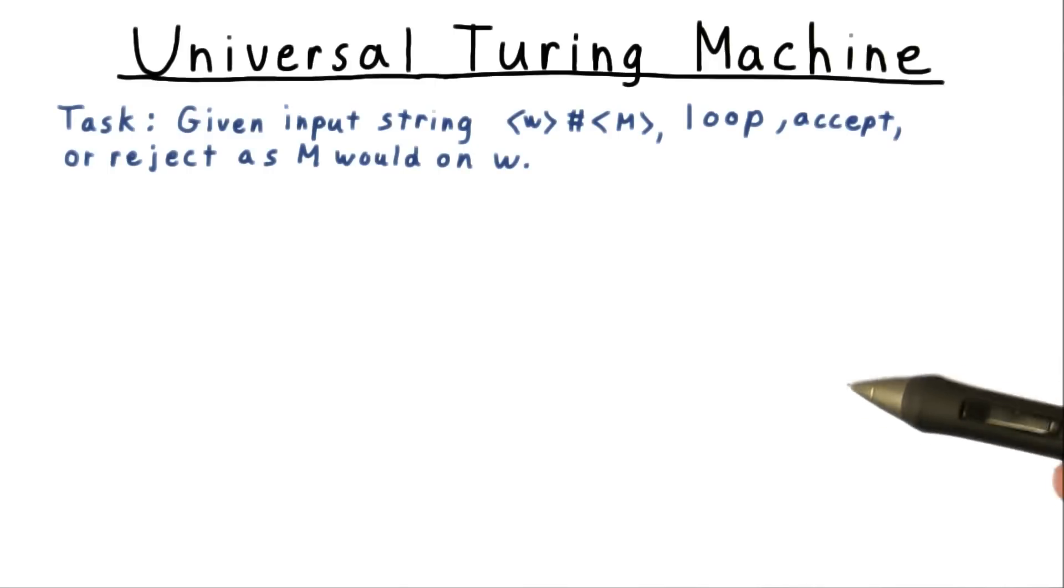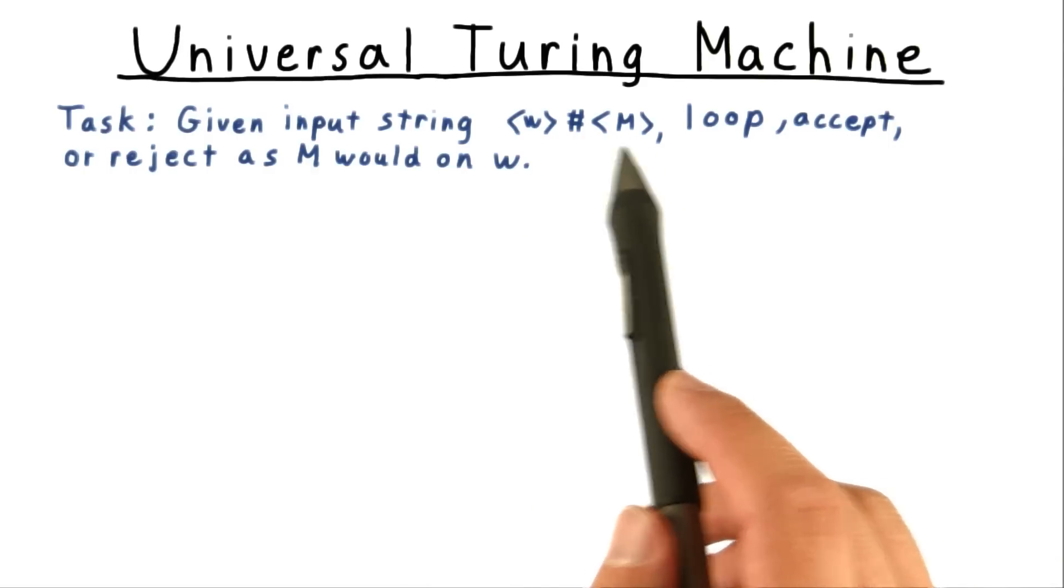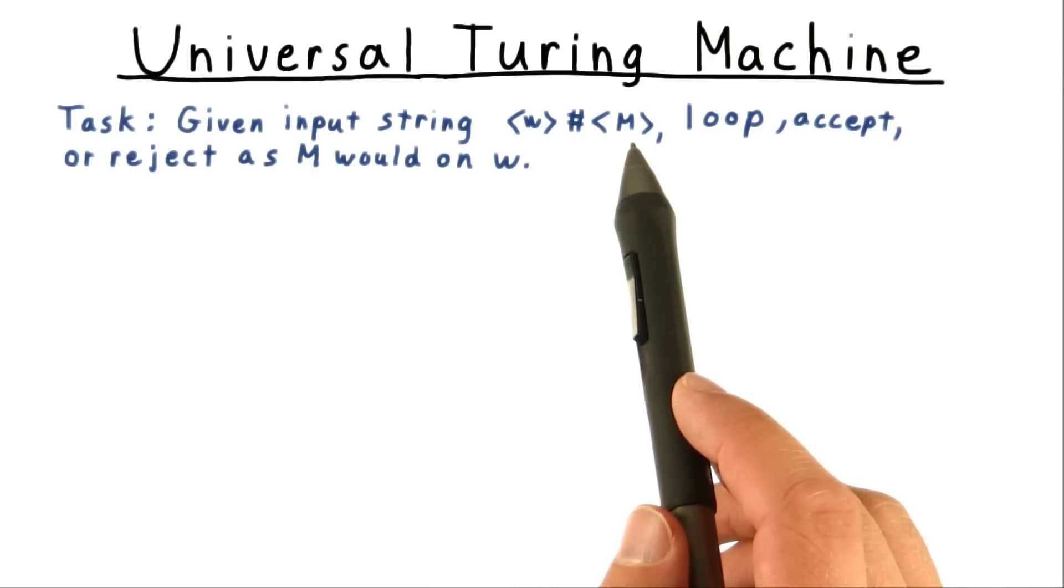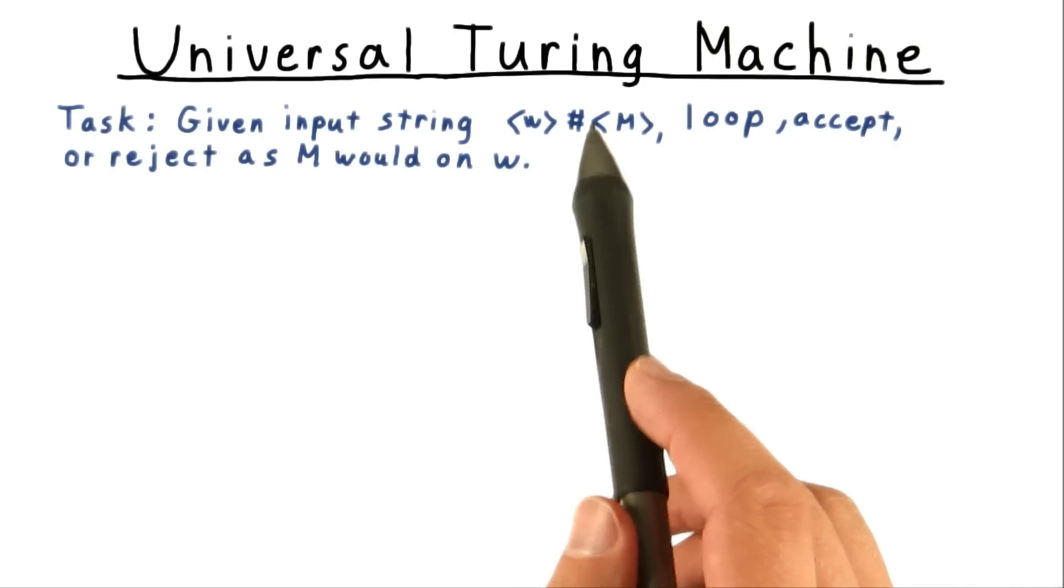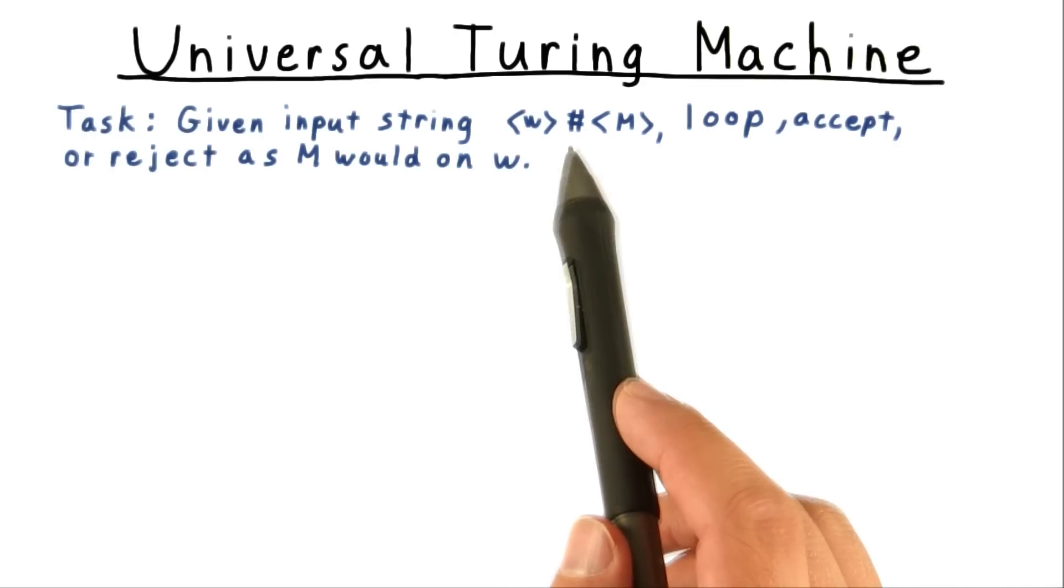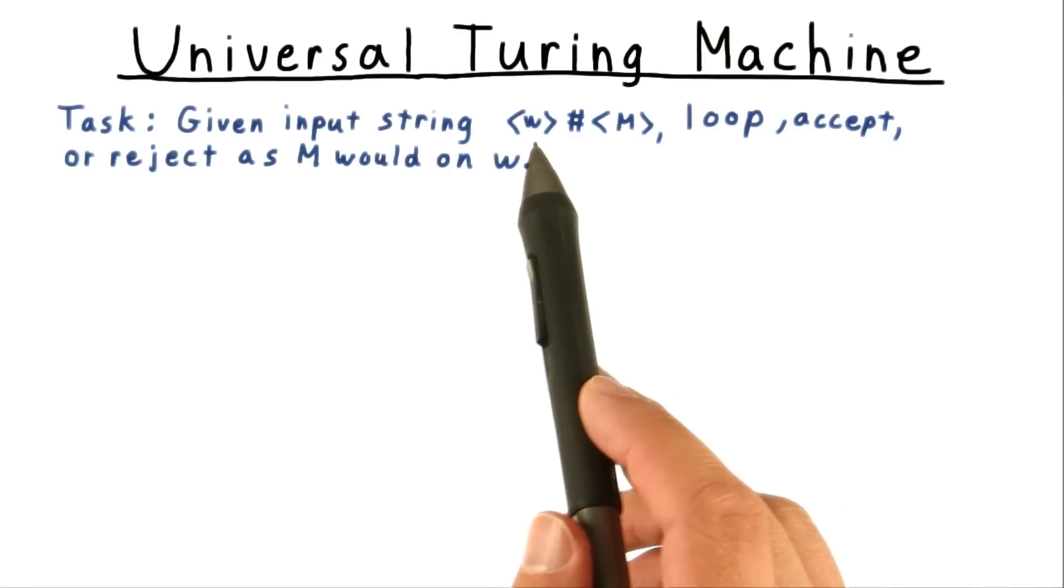Now we're ready to describe how to build this all-powerful universal Turing machine. As input to the universal machine, we give the description of the machine we want to simulate and the input we want to simulate it on, these two things separated by a hash.